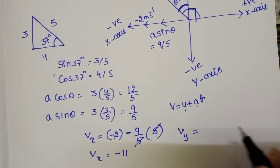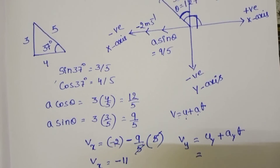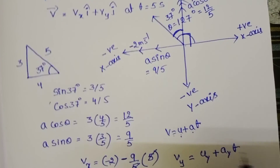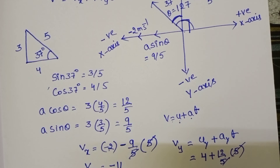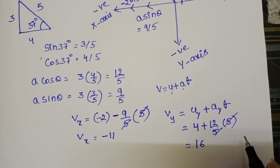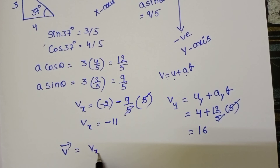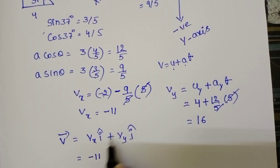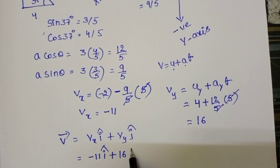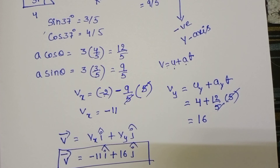For vy, vy equals uy plus ay times t. The initial velocity along y is 4, and the acceleration along y is 12/5. So vy equals 4 plus (12/5) times 5 equals 4 plus 12 equals 16 meter per second. Therefore the final velocity vector is V bar equals minus 11 i cap plus 16 j cap at t equals 5 seconds.